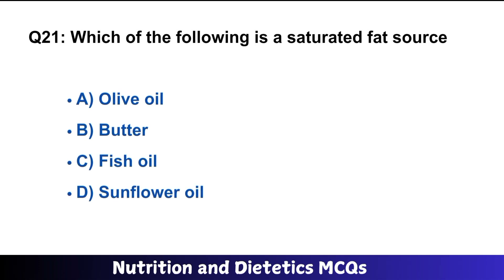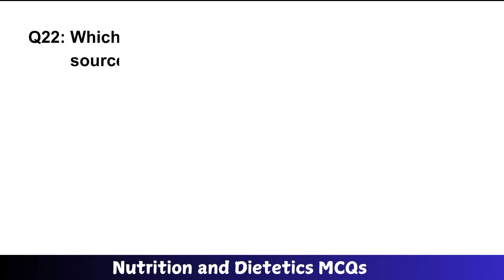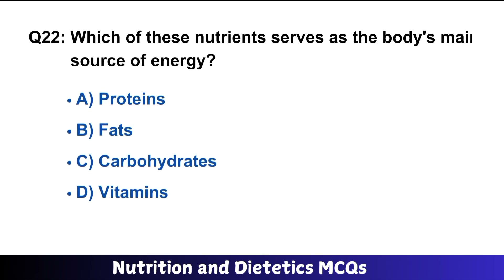Question number twenty-one: which of the following is a saturated fat source? B is the right option: butter. Question number twenty-two: which of these nutrients is the body's main source of energy? C is the right option: carbohydrates.